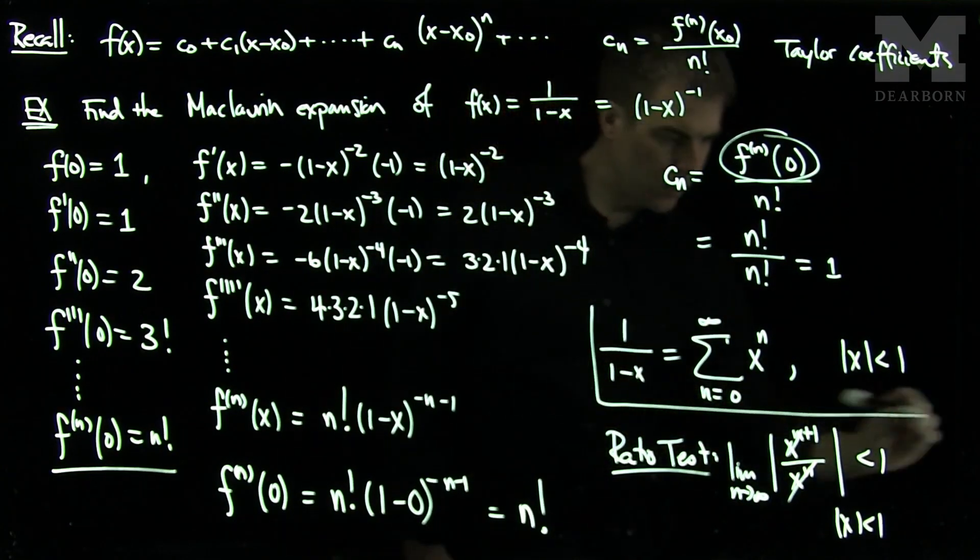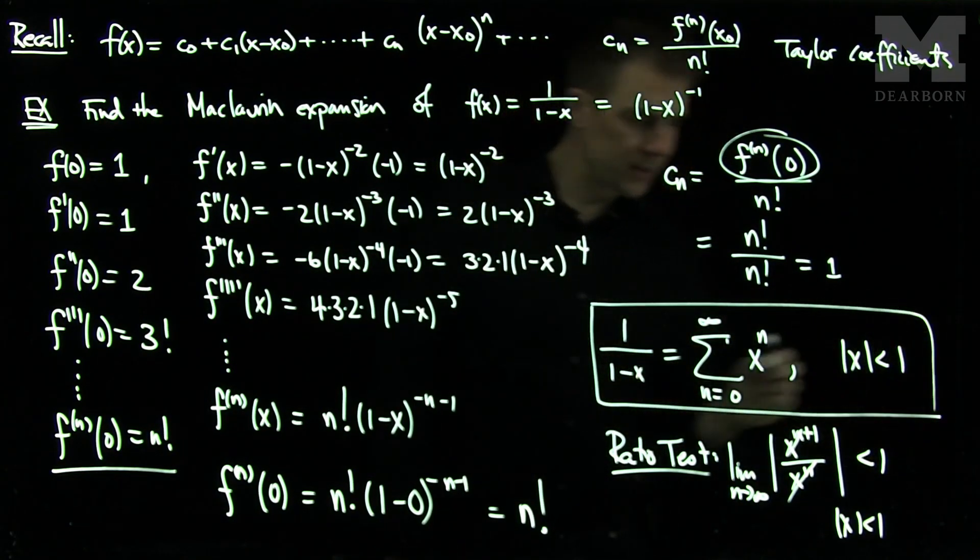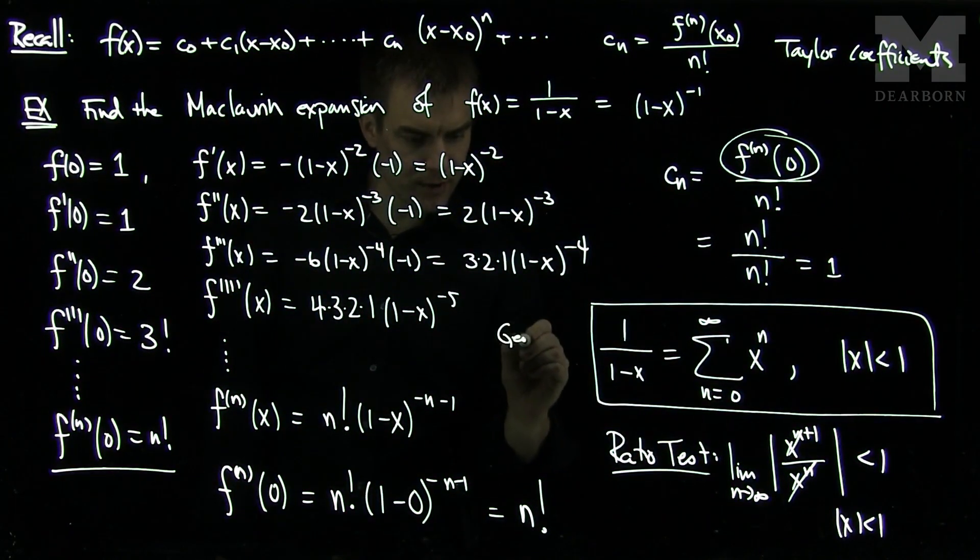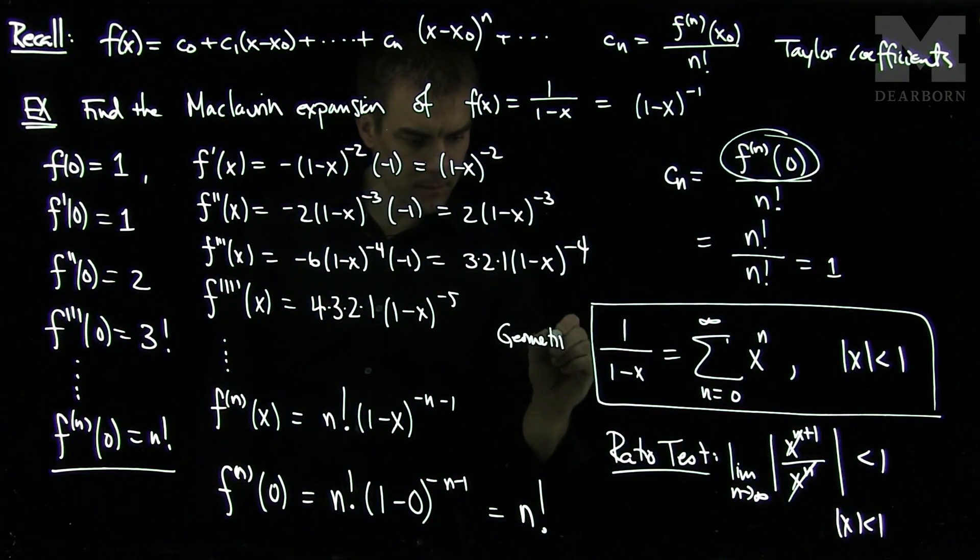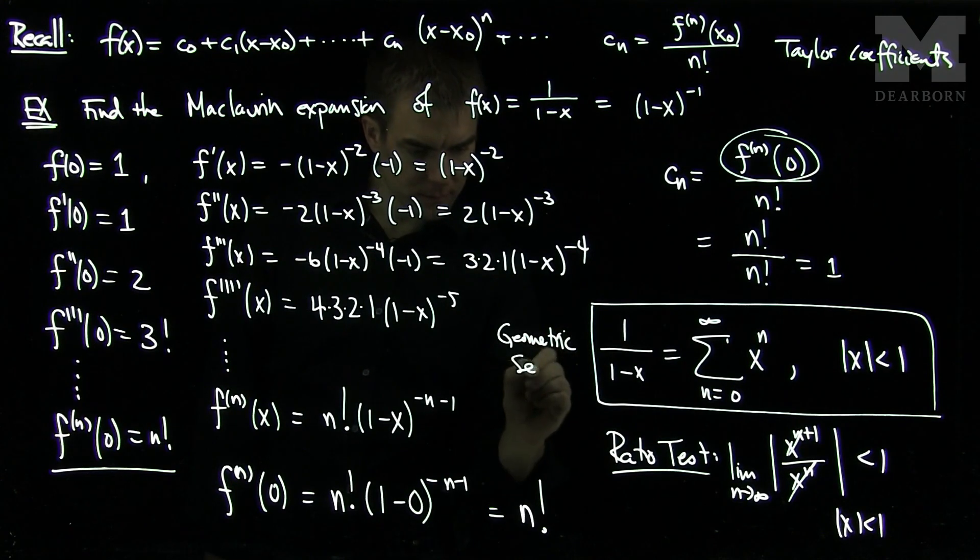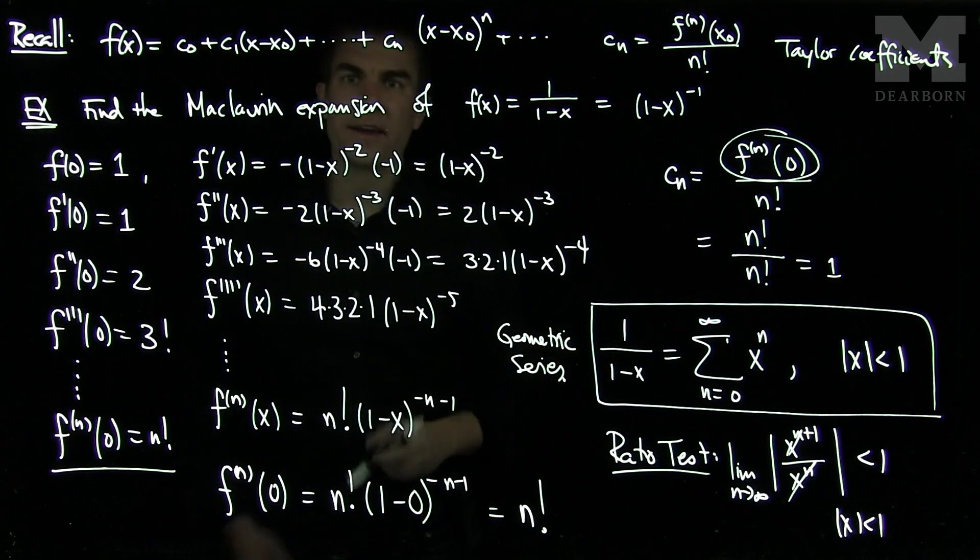So this is our McLaren expansion of 1 over 1 minus x, and this, of course, is our geometric series. Thank you very much.